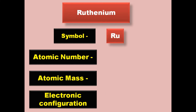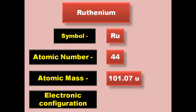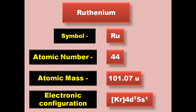Ruthenium has symbol Ru, atomic number 44, atomic mass 101.07, electronic configuration [Kr] 4d7 5s1. Ruthenium is a transition metal and exists in solid form at room temperature.